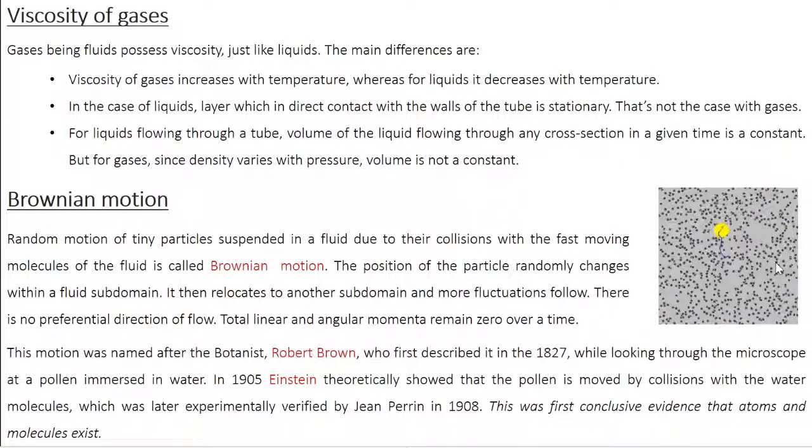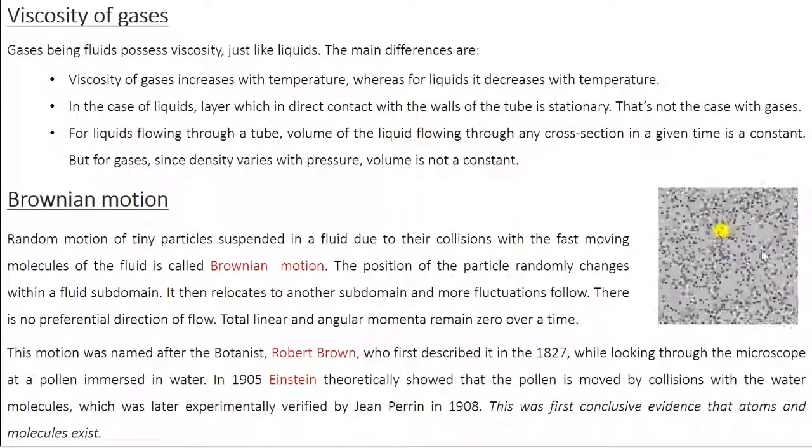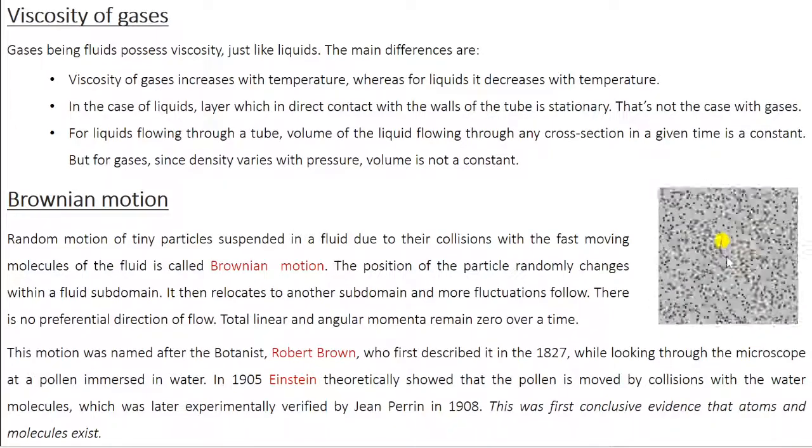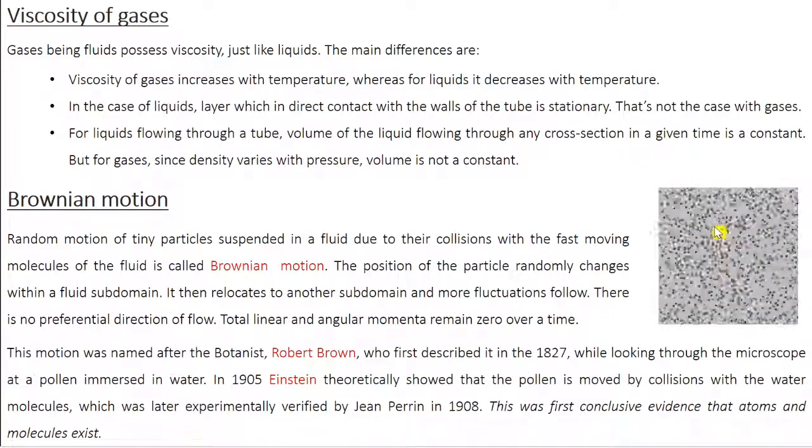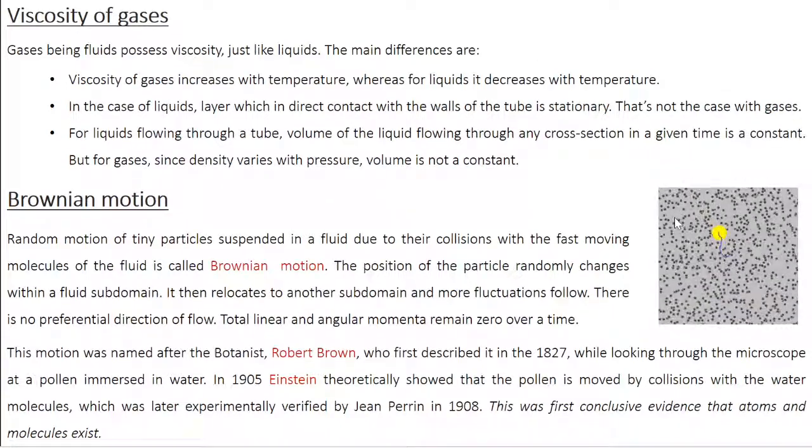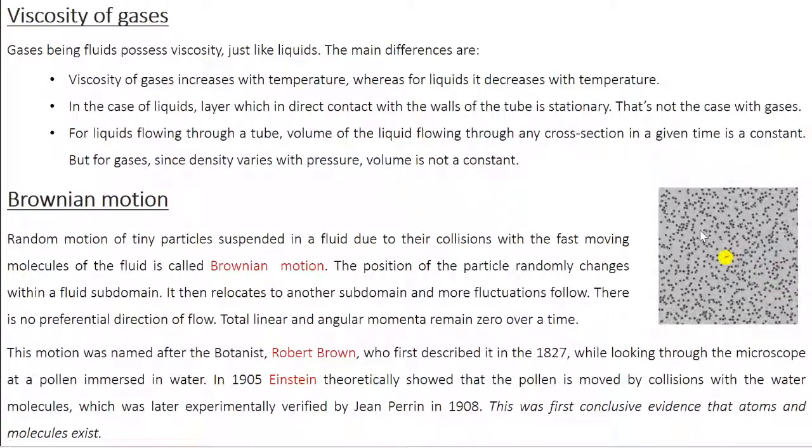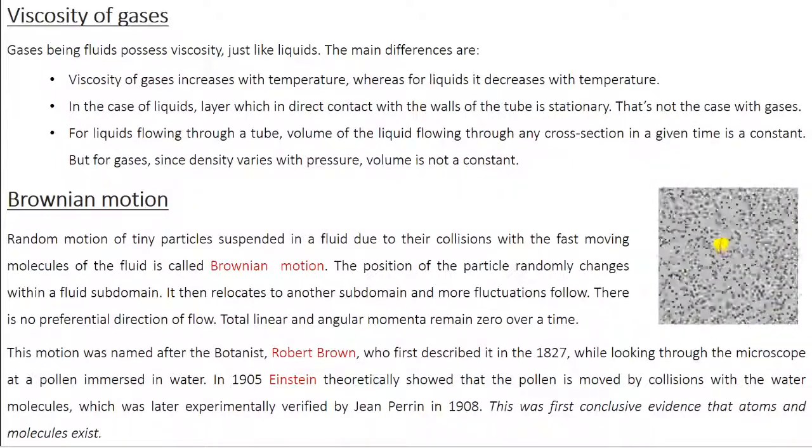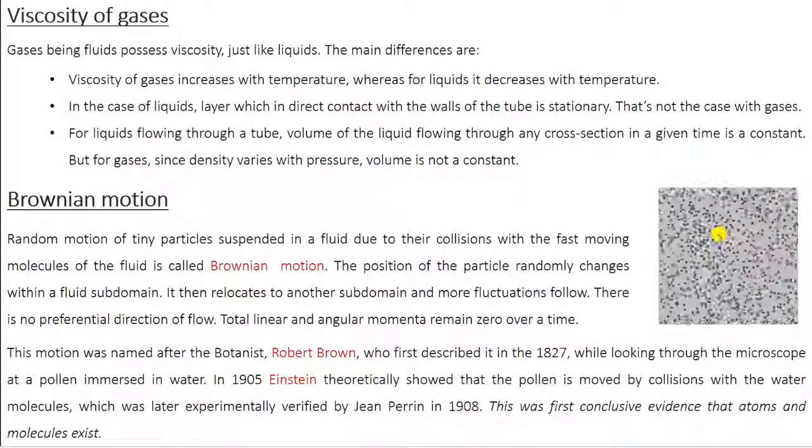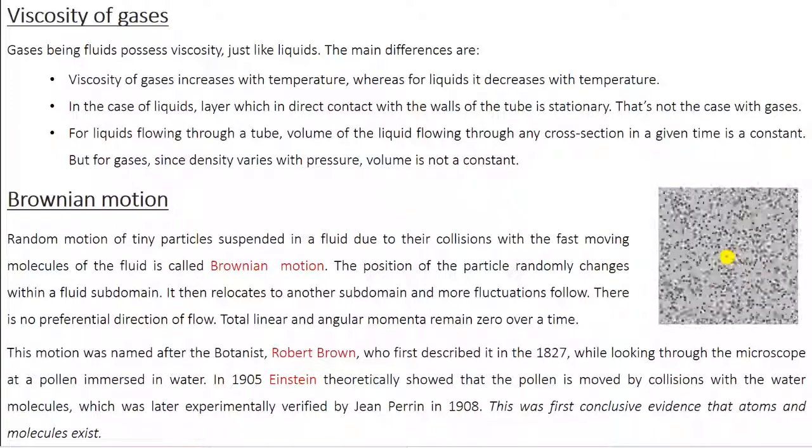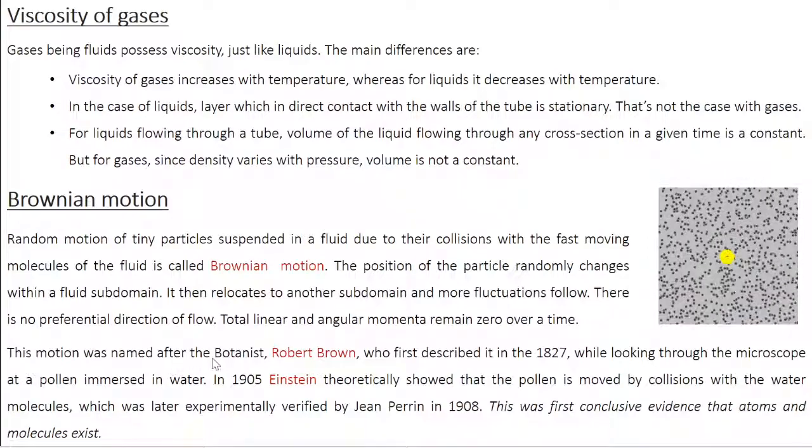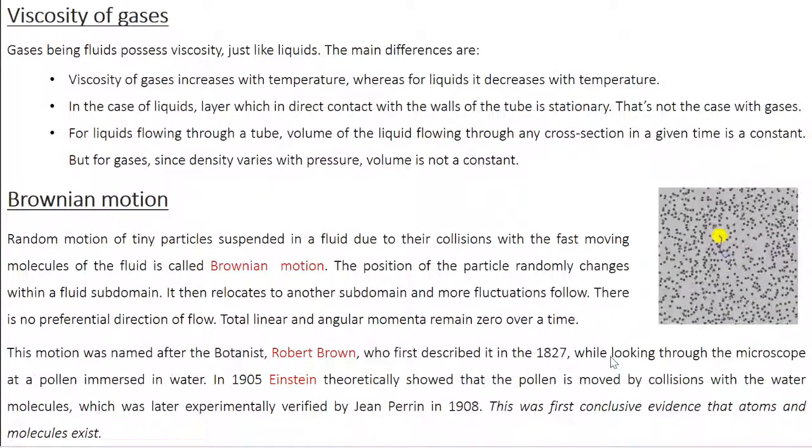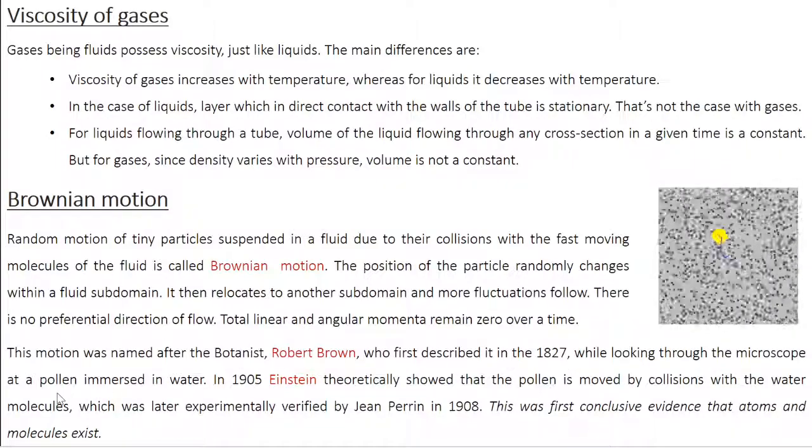The position of the particle randomly changes within the fluid subdomain. You can divide this into subdomains. Within each subdomain, the particle represented by the yellow dot is going to move randomly because of collision with the water molecules. It moves in one subdomain randomly, then relocates to another subdomain and undergoes same random movement. There is no preferential direction of flow. This is completely random because the collisions are, by default, random in nature. Since we are talking about random movement, the total linear and angular momenta are going to be zero over time. This motion was named after botanist Robert Brown, who first described Brownian motion in 1827, while looking through a microscope at pollen immersed in water.